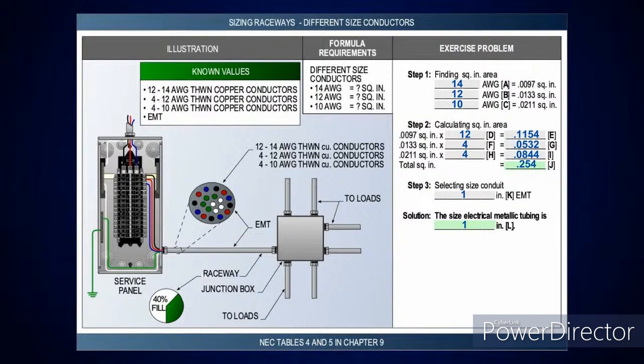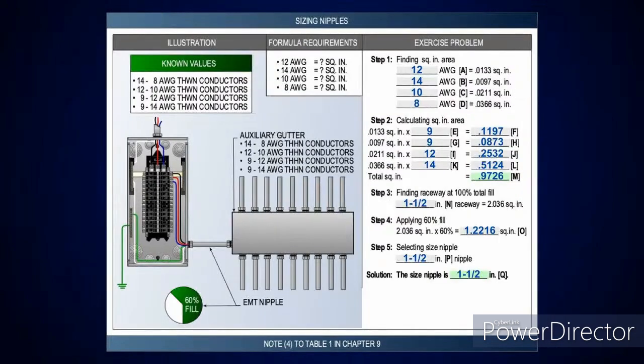Come across to the left and it tells you that you need a 1-inch EMT. Very simple to follow. I want to point out the 40% fill on that raceway — if you were to shorten it to 24 inches or less, then you could do up to 60% fill. That's going to be on the next example.